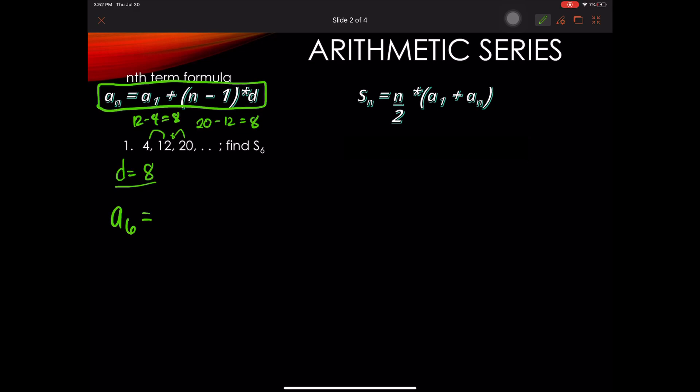And now we plug in our given. A sub 6 is equal to, our first term is 4. So A sub 1 is 4. So we have 4 plus 6 minus 1 times the common difference of 8.